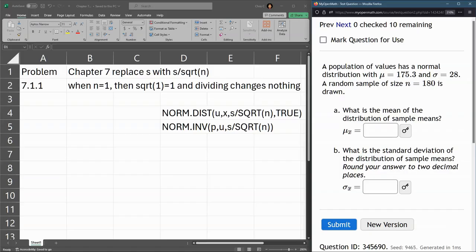We're ready for problem 7.1.1, and this gives us a mean of the population, a standard deviation of the population, and we do have a random sample size. This size is pretty big, so it's going to drop that standard deviation quite a bit when we compute it.